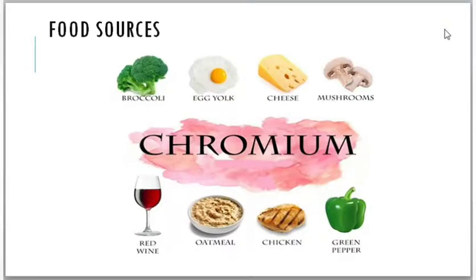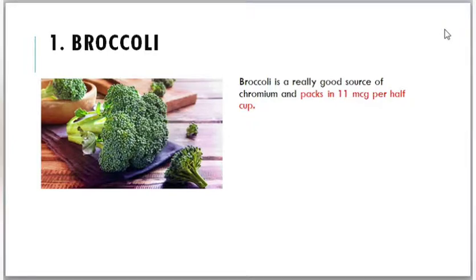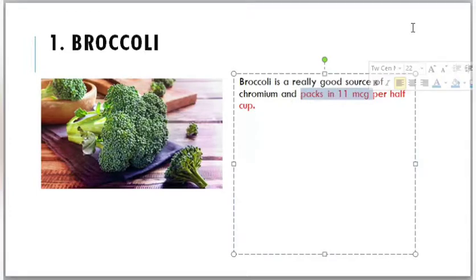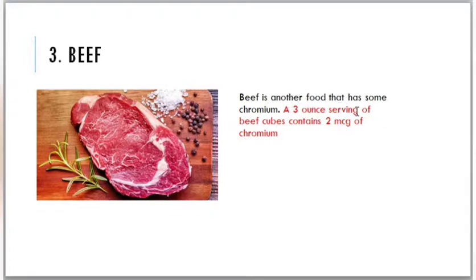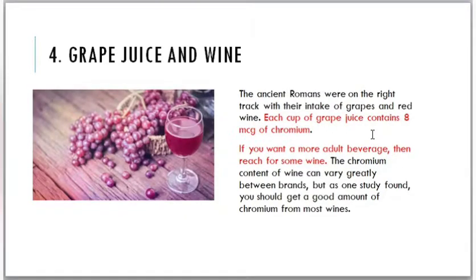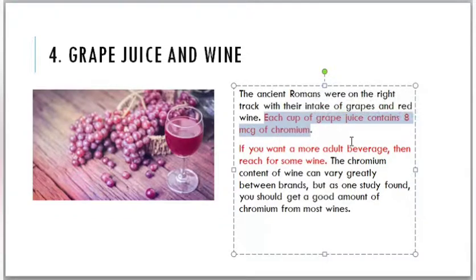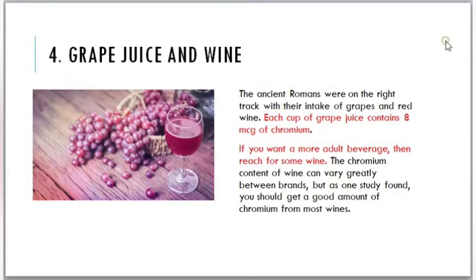There are a wide variety of food sources for chromium. Broccoli is a really good source — half a cup contains about 11 micrograms. A cup of mashed potatoes contains about 3 micrograms. A 3-ounce serving of beef cube contains 2 micrograms. Each cup of grape juice contains about 8 micrograms of chromium, and you can also get a good amount from most wines.